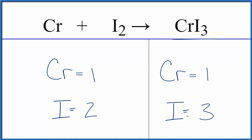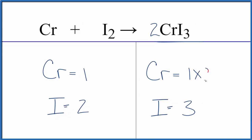That's a little complicated. We could make it easier if we doubled everything over here. One times two, that'll give us two chromiums. Then this three times two, that would give us six of these iodines.